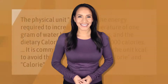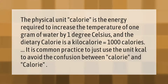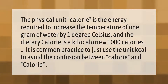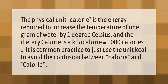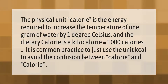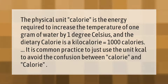The physical unit calorie is the energy required to increase the temperature of one gram of water by one degree Celsius. The dietary calorie is a kilocalorie, which equals 1000 calories. It is common practice to use the unit kcal to avoid confusion between calorie and Calorie.